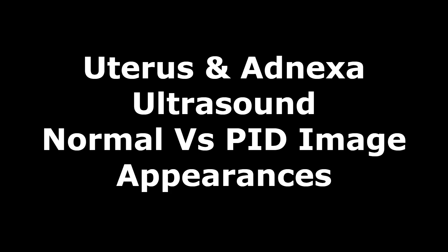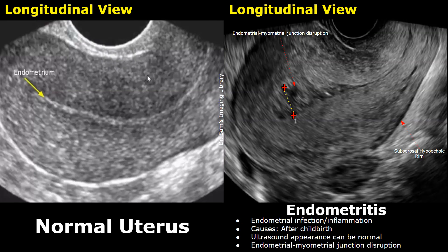Hello everyone, this is Dr. Sam and today we will learn about Pelvic Inflammatory Diseases on Ultrasound. Pelvic Inflammatory Disease includes infections and inflammation of the uterus, ovaries, and fallopian tubes. Diseases include endometritis, which is inflammation of the endometrium; cervicitis, which is inflammation of the cervix; hydrosalpinx, which refers to a fluid-filled dilated fallopian tube; piosalpinx, which refers to a pus-filled fallopian tube; and tubo-ovarian abscess.